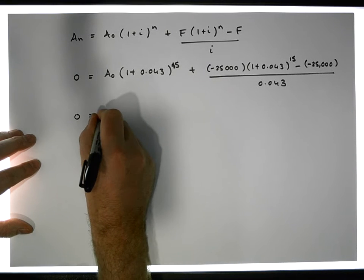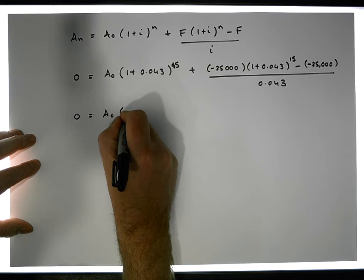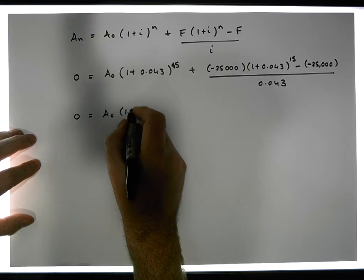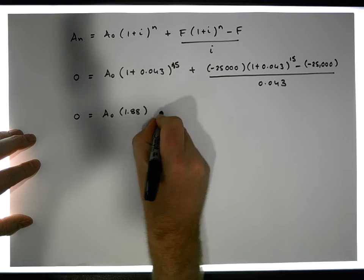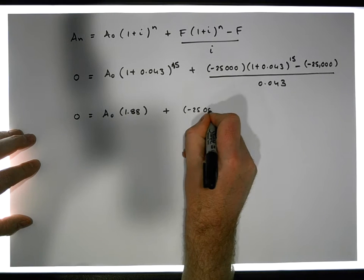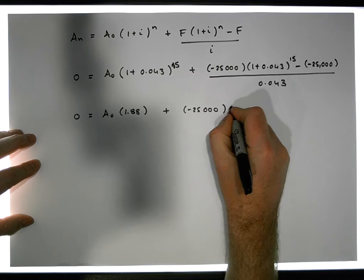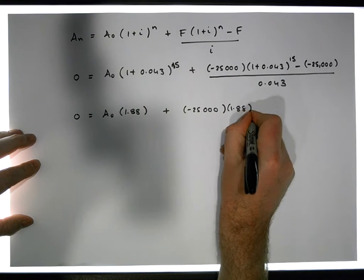Plus minus 25,000 euros times 1.88, minus times minus gives us a plus 25,000 euros, divided by 0.043.